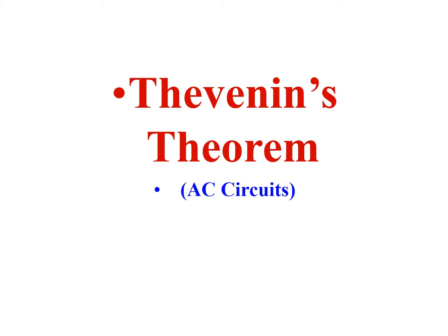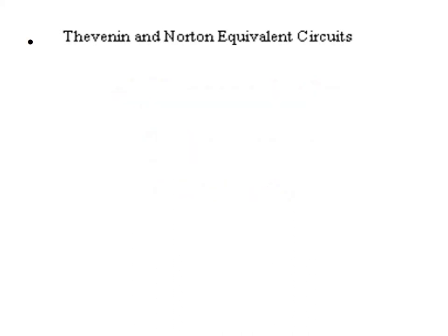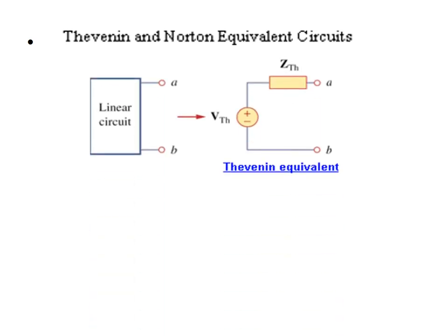Bismillahirrahmanirrahim. In this video we'll learn about Thevenin's theorem. Briefly, we'll recap whatever we have learned in Circuit 1 about Thevenin's and Norton's theorem. Thevenin's theorem states that any circuit can be reduced to a simple equivalent voltage source at the terminal and an equivalent impedance — in the case of AC — or a resistance in the case of a DC circuit.